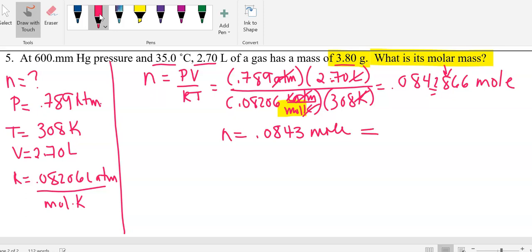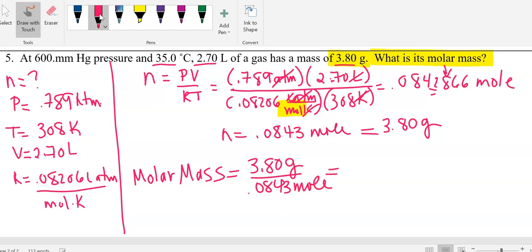And we know that that corresponds to 3.80 grams. So our molar mass is 3.80 grams represents 0.0843 moles. And when we do our division, we get 45.077. Rounding to 3 sig figs would be there, so 45.1 grams per mole equals molar mass.